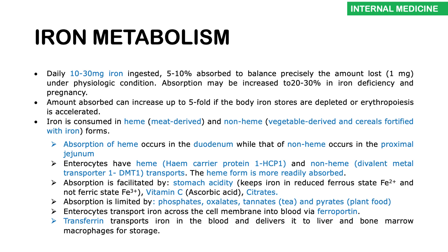Iron can be derived from animal products — heme iron — or from vegetables and fortified cereals — non-heme iron. Heme iron is absorbed much better than non-heme iron. Heme iron is absorbed in the duodenum via heme carrier protein 1, while non-heme iron is absorbed in the proximal jejunum via the divalent metal transporter 1 (DMT-1).